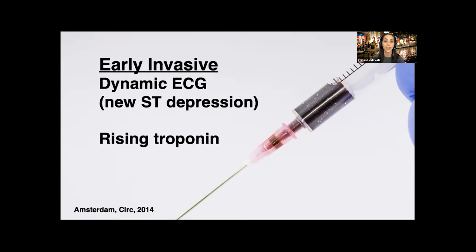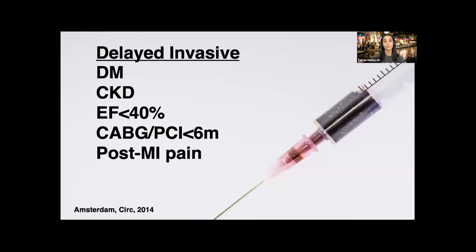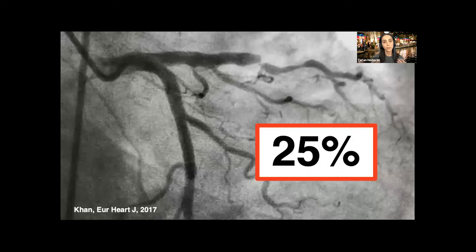An early invasive strategy means two to 24 hours and applies to patients with dynamic ECGs, new ST depressions, and rising troponins. Then there's a delayed invasive strategy at 24 to 72 hours, covering high-risk patients: diabetics, CKD, heart failure with EF less than 40%, patients who've had CABG or PCI within the last six months, and patients with a prior MI presenting with pain.